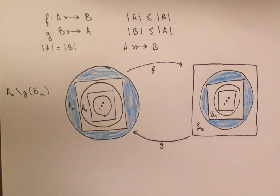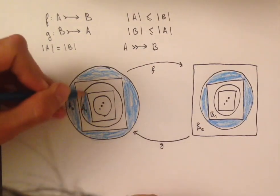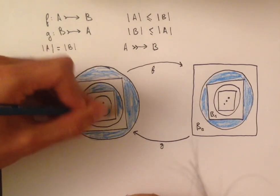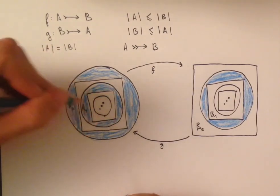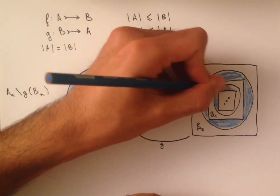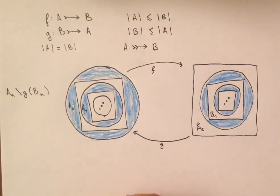And so we can also do the same thing with A1. So we're going to take F of A1, and that's this region in here, and so on. But I only drew two because I couldn't draw infinitely many.